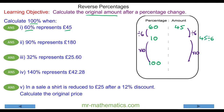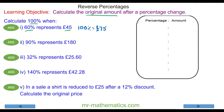We divide 45 by 6 and then multiply that by 10. 45 divided by 6 is 7.5, and 7.5 multiplied by 10 is 75. So 60% represents £45, meaning the original amount — 100% — is equal to £75.